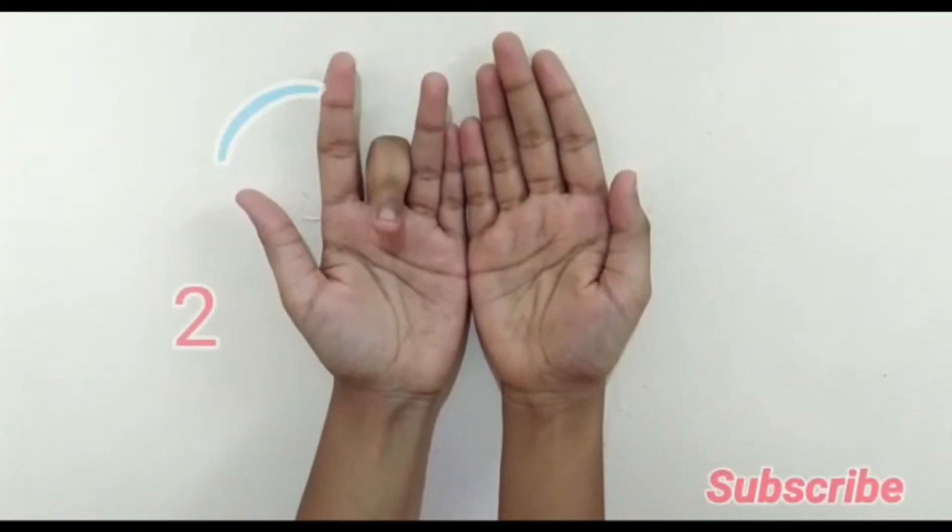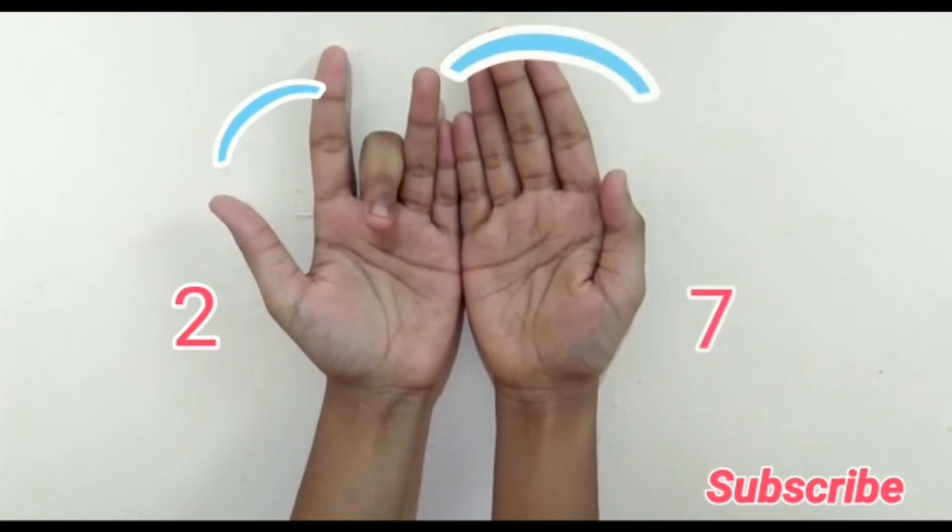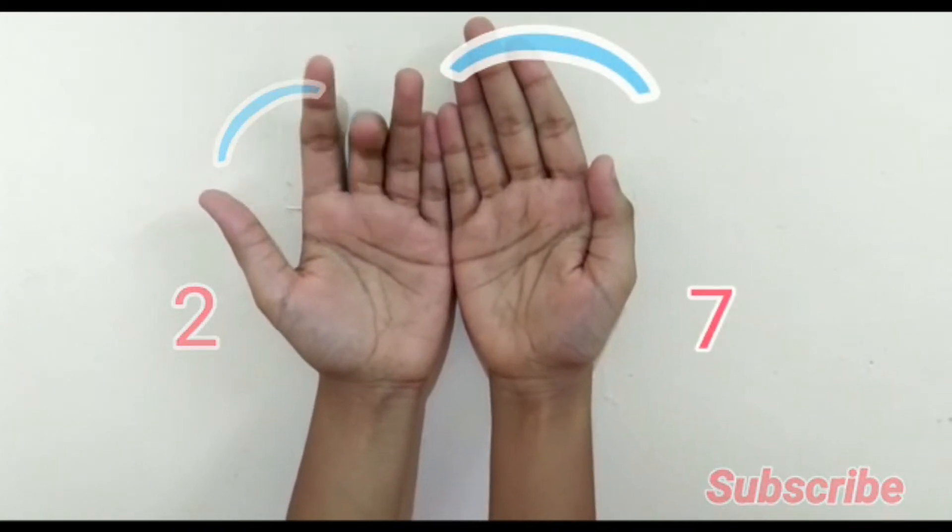3 into 9. So fold your third finger. Towards the left side of the folded finger it's 2 and towards the right side it's 7. So 3 times 9 are 27.